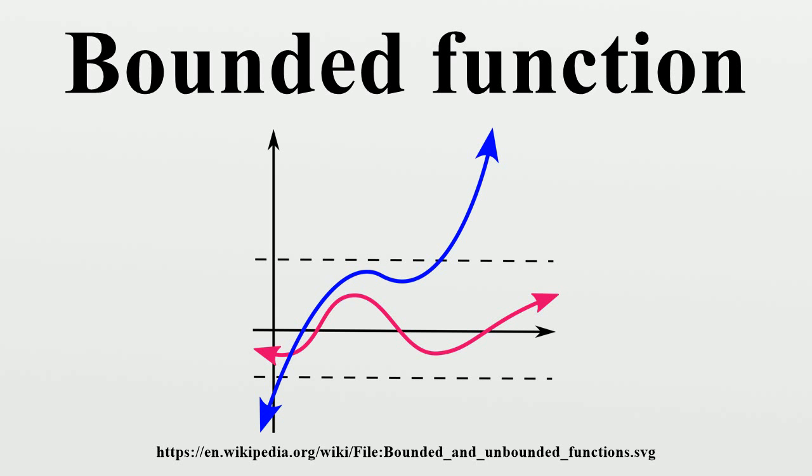The function defined for all real x except for -1 and 1 is unbounded. As x gets closer to -1 or to 1, the values of this function get larger and larger in magnitude. This function can be made bounded if one considers its domain to be, for example,